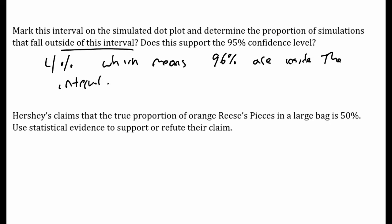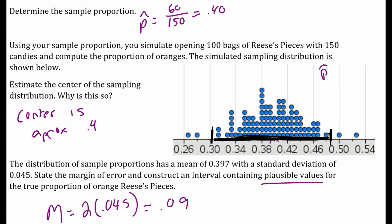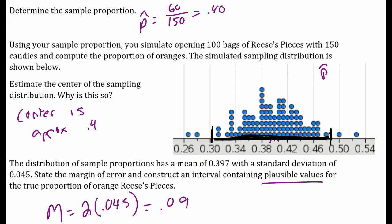Does that support our 95% confidence level? Yes — 96% is basically 95%, they're pretty close. So our confidence interval captures about 95% of these p-hats.